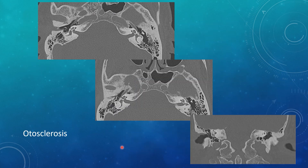For otosclerosis, you're looking at the fissula ante fenestram, which is the cortical bone between the cochlea and the semicircular canals — it should be nice, bright cortical bone. Here you can see focal areas of lucency within the bone between the cochlea and the semicircular canals. This is a classic location and appearance of otosclerosis. You can also have a pericochlear variant with areas of lucency around the cochlea. On the coronal view, where it should be bright cortical bone it instead appears as more lucent, spongy bone.